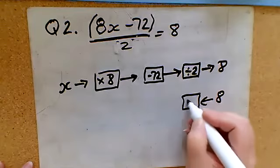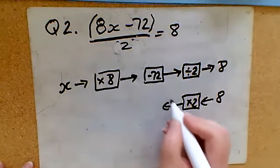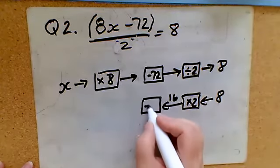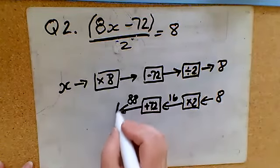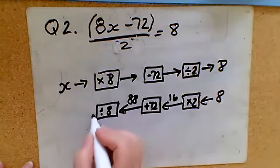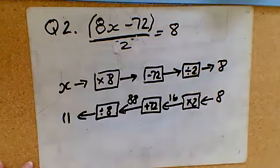Working back the other way using inverse operations, this time I would times by 2. 8 times 2 that would give me 16. The opposite of taking 72 away would be to add 72, which would give me 88. And then the inverse of multiplying by 8, divide by 8, which would give me x equals 11.